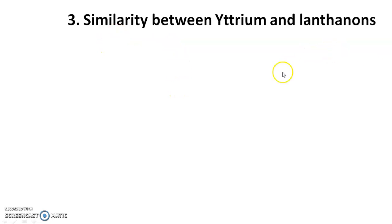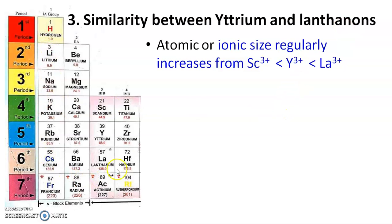The third important effect is similarity between yttrium and lanthanides. In the periodic table, Group 3 contains scandium, yttrium, and lanthanides. Atomic and ionic size regularly increases from Sc³⁺ to Y³⁺ to La³⁺, as expected from top to bottom. But in Group 3, sixth row, there are 15 elements including lanthanum — from lanthanum to lutetium.